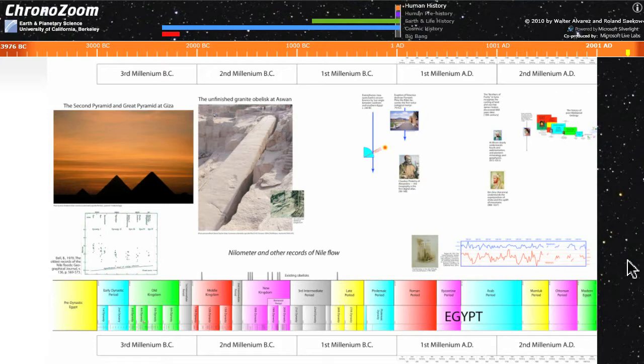Human prehistory goes back to about five million years ago compared to written history which only goes back 5,000 years ago. So that means that we have to zoom out by a factor of 1,000 in order to see all of human prehistory.